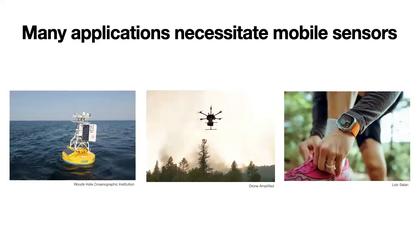A lot of the systems and applications we want to study necessitate mobile sensing. For example, buoys in the ocean can help scientists understand ocean dynamics, weather patterns, and marine environments. Drones can be deployed into a wildfire to figure out the hottest spots to address first or to locate missing persons. Something I'm very passionate about is wearable tech like smart watches that use sensors like heart rate monitors or accelerometers to enable individuals to monitor and manage their own health or fitness, especially in real time.